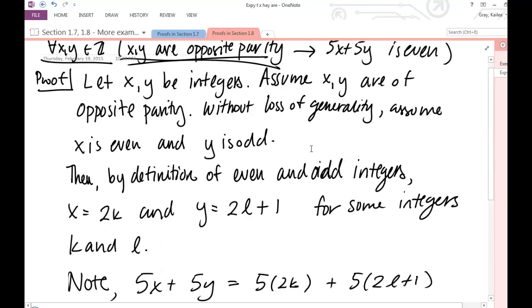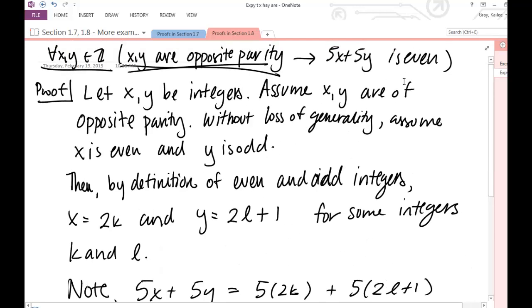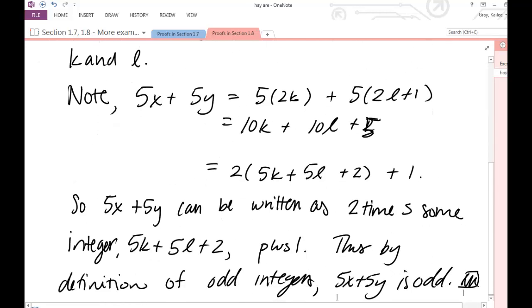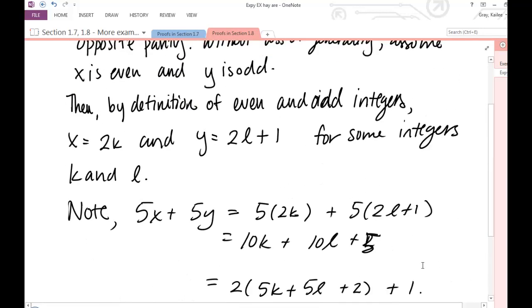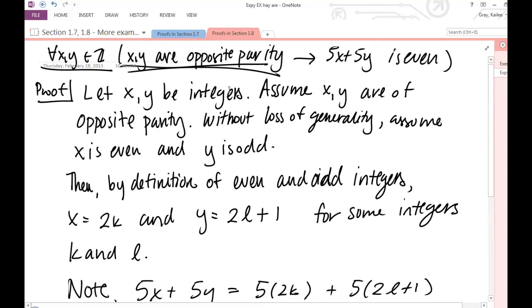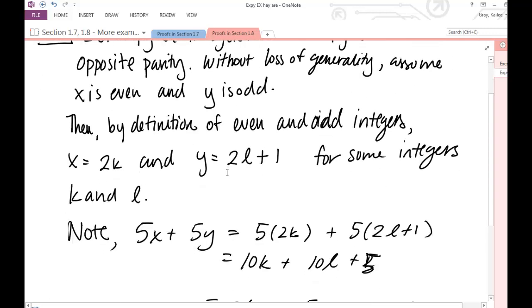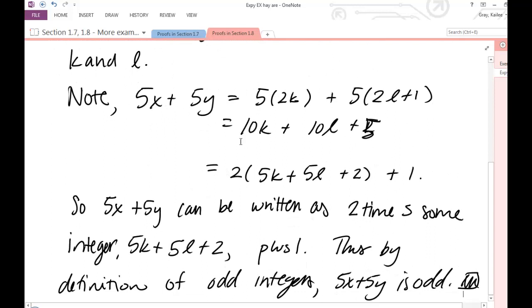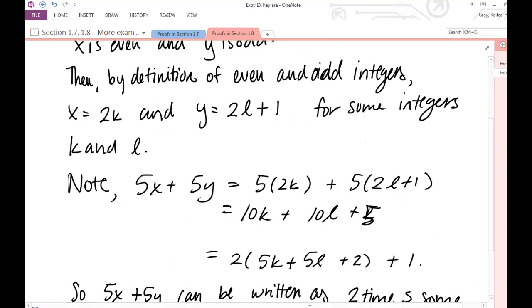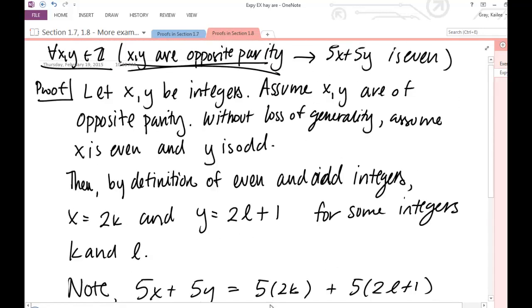We've made our assumption clear. Our assumption is that x and y are of opposite parity. We've made our conclusion clear that 5x plus 5y is odd. We've declared all our variables. We've said that k and l are integers. I know that x and y are integers. I have complete sentences. It's legible. My algebra portion is good and I didn't make any mathematical or arithmetic errors. Looks good. Let me know if you have questions.